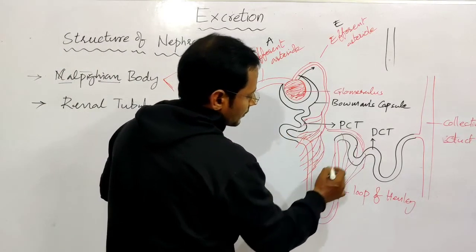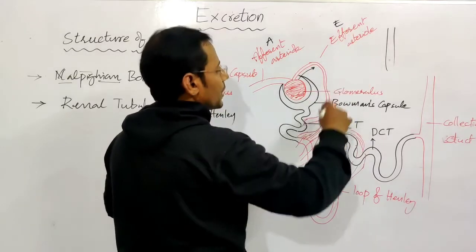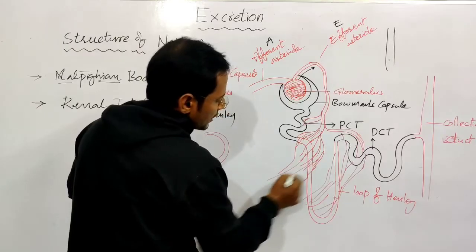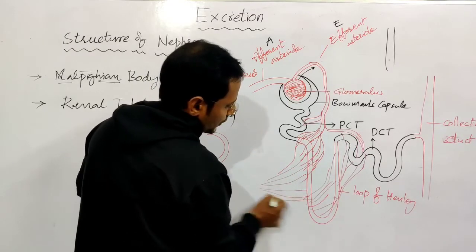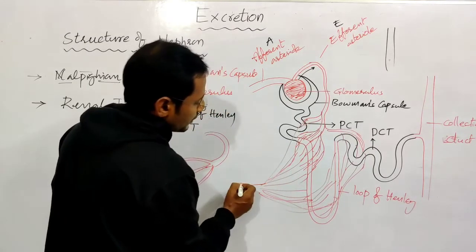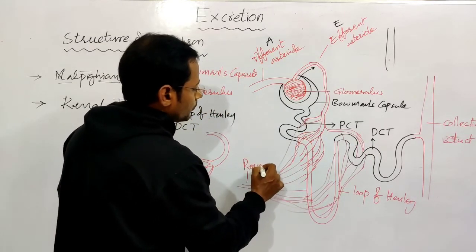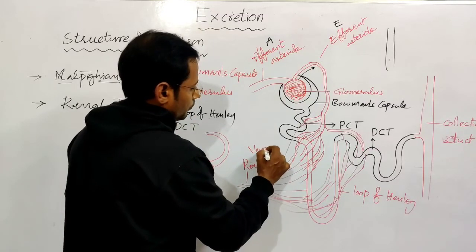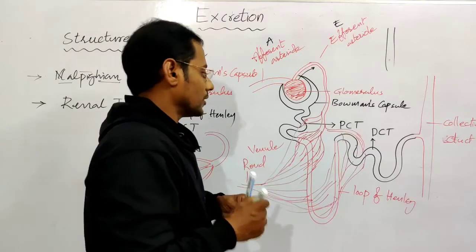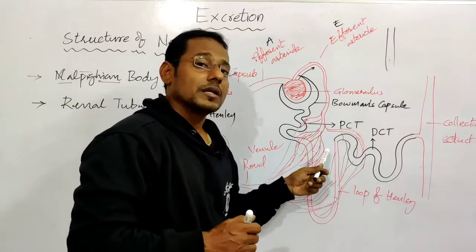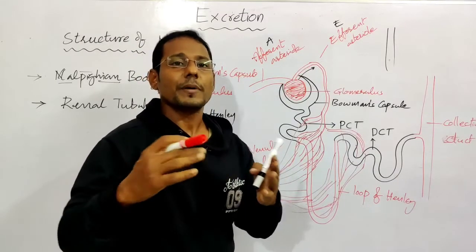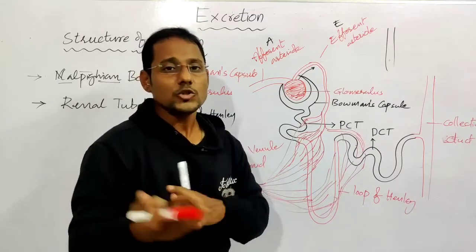Blood capillaries from the efferent arteriole form a network around the tubules. This capillary network around the renal tubule forms a renal venule. This network is called the pericapillary network or peritubular network.